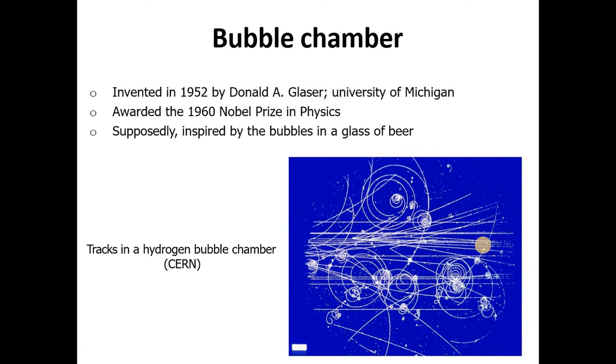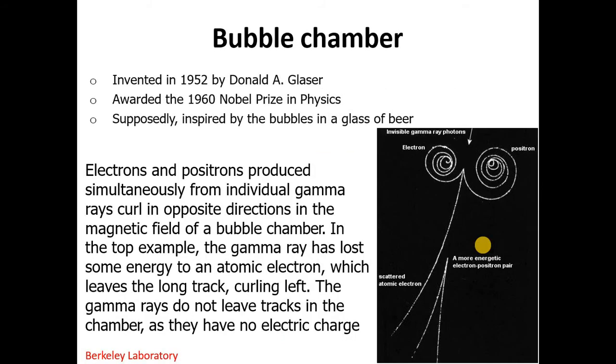Tracks in hydrogen bubble chamber are shown in the image at CERN. These tracks are visible by using bubble chamber for the particles. Electrons and positrons produced simultaneously from individual gamma rays curl in opposite directions in the magnetic field of bubble chamber because of their charged nature. In the top example, the gamma ray has lost some energy to an atomic electron which leaves the long track curling left. The gamma rays don't leave tracks in the chamber because they have no electric charge.